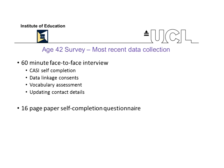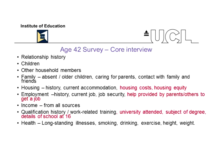The age 42 survey, the most recent, was conducted in 2012 when study members were age 42. It comprised a 60-minute face-to-face interview and a 16-page paper self-completion questionnaire. Much of the information collected was core content featured in all or most of the adult suites of BCS70, but there were also new topics indicated here in red. These included questions about housing costs and housing equity to get a better sense of total wealth, and in terms of employment, questions on help received from parents and others in getting a job — potentially important given recent debates about social mobility.